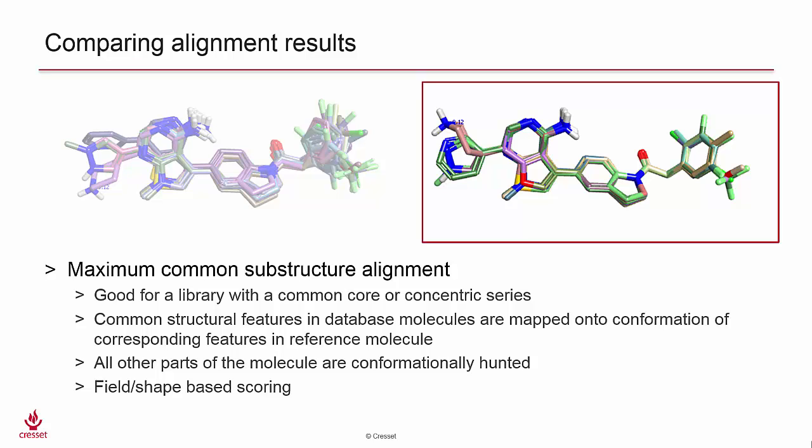This can be useful for identifying structure-activity relationships for a library built on a single scaffold with functional variations around the core. For more diverse sets, the MCS option is not preferred.